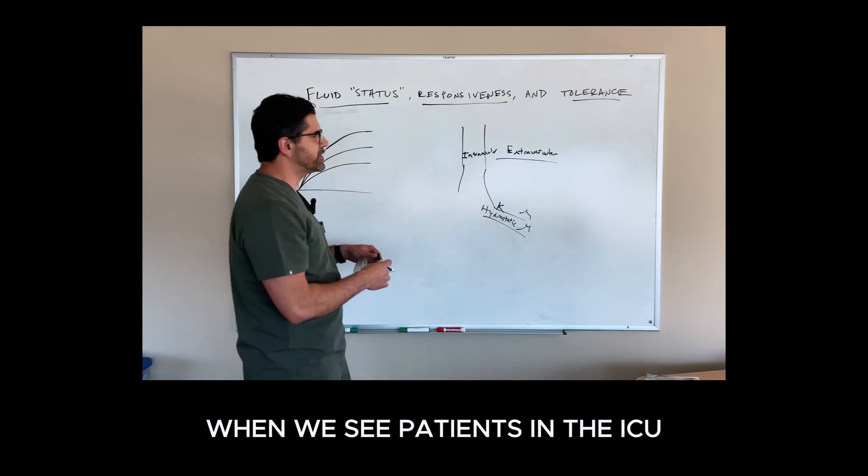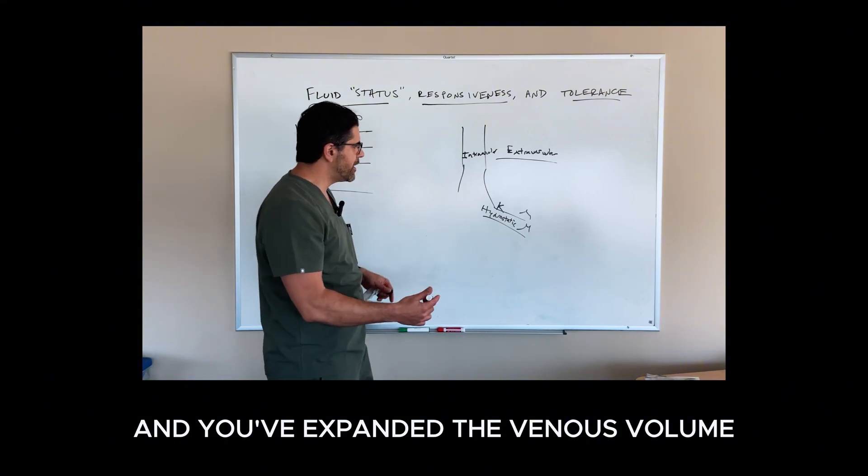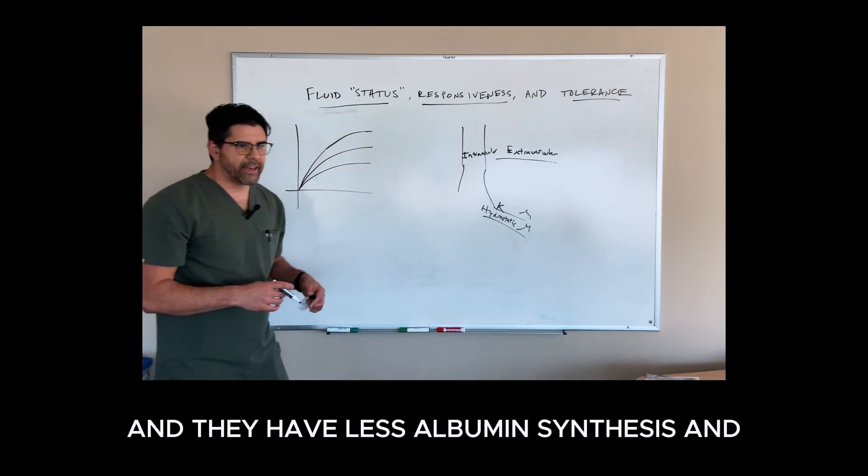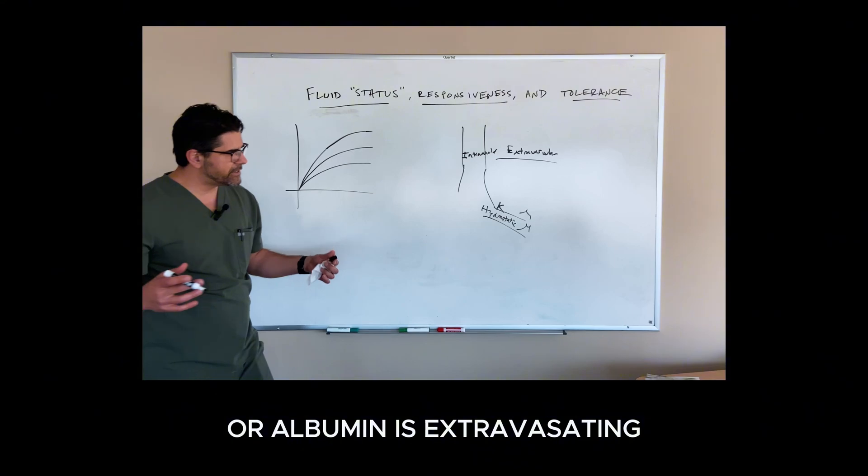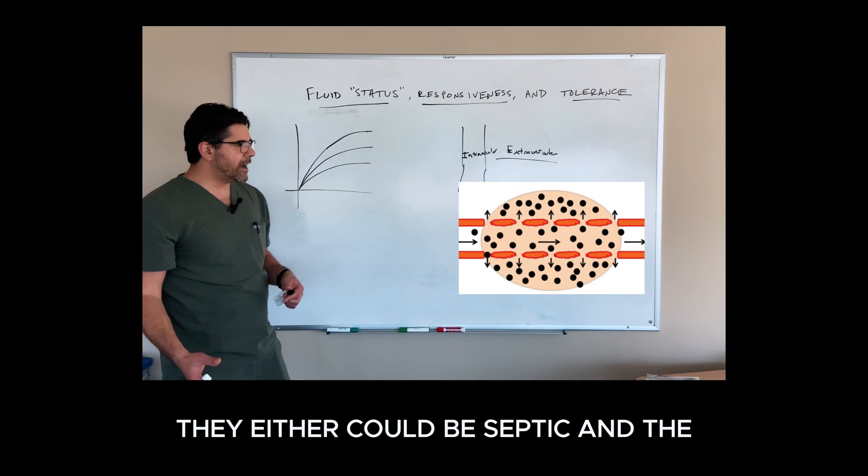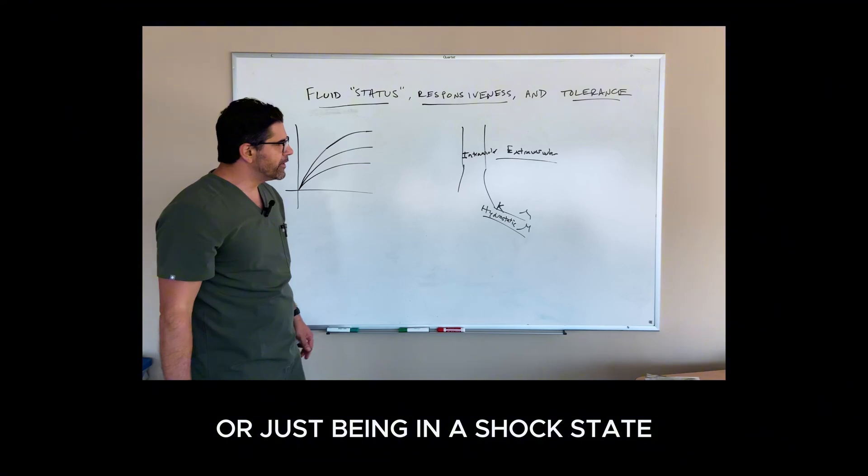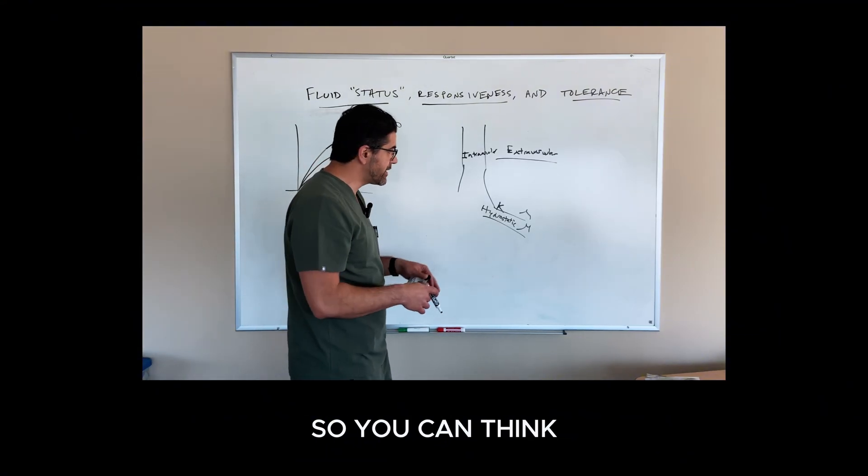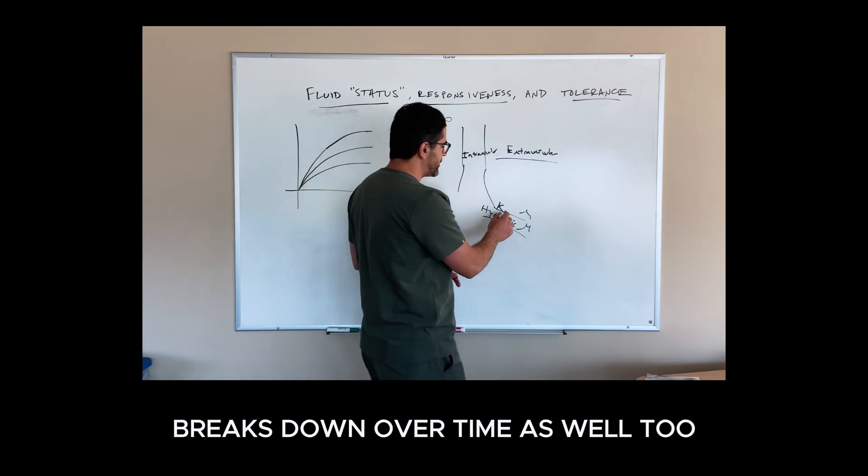However, when we see patients in the ICU, they often have one or more of these things disrupted. You've given volume resuscitation and expanded the venous volume, so capillary hydrostatic pressure is higher. They start to become ill and have less albumin synthesis or albumin is extravasating. They also often have leaky capillaries. They could be septic and the tight junctions between endothelial cells are weakened, or just being in a shock state for long enough, everything starts to not work.